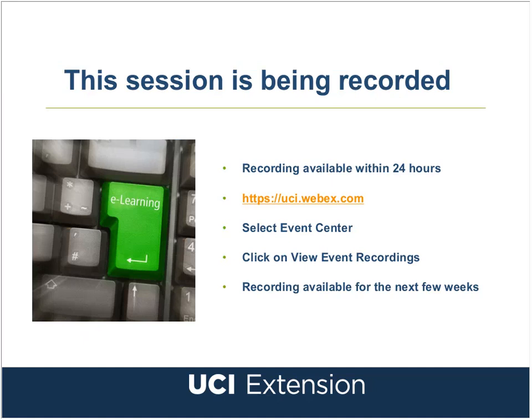If you registered through Extension's free events website, you will automatically receive an email with a link to this recording. If you do not receive the email, you can access the archive manually by going to uci.webex.com, clicking on the Event Center tab, and then clicking on View Event Recordings. This presentation will be listed with other recordings, so you would simply search for this webinar's title. The majority of you registered through the free events website, so you will automatically receive an email tomorrow with the recording link.